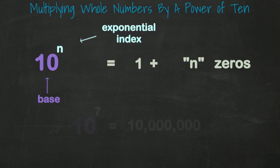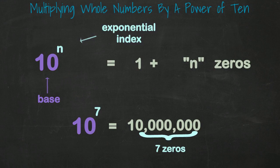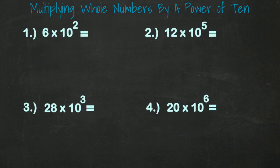So for example, 10 to the 7th represents the same thing as 1 followed by 7 zeros, which means 10 million. So if it can be broken down into 1 plus 7 zeros, then if we were to multiply a whole number by 10 to the 7th, we would end up getting the whole number plus 7 zeros, right?